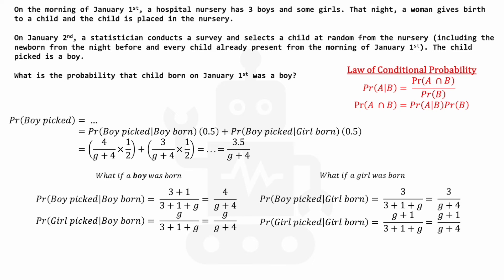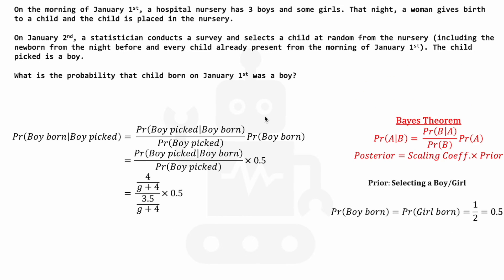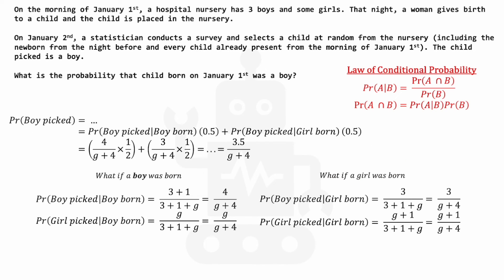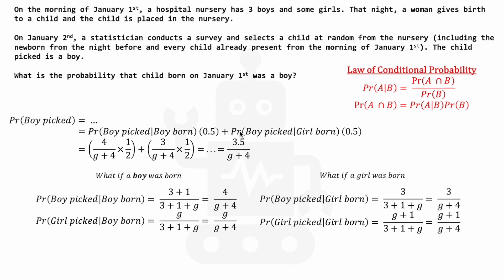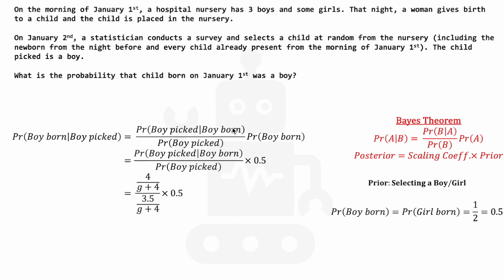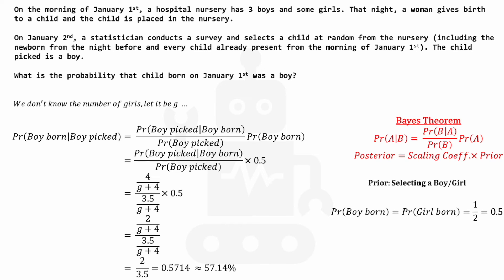Don't worry, the g will wash out in the end. Plugging in the values into our scaling coefficient of Bayes' theorem: on the numerator, P(boy picked | boy born) = 4 over g plus 4, divided by P(boy picked) = 3.5 over g plus 4, then multiplied by the prior of 0.5. Running through the calculations, the g plus 4 cancels, the 0.5 cancels, and finally we get 0.5714 — approximately 57.14%.